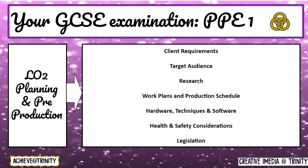For learning objective 2 of the exam paper, students need to be able to interpret a client brief and answer questions based upon the client brief and their requirements. They will also need to understand the different categories of target audience and how different target audiences would impact on how a product would be created. Examples of primary and secondary research will also be required. There is a huge emphasis on reading the client requirements and meeting the client's needs. Students may be asked to create a work plan or production schedule that incorporates tasks, activities, and timescales, as well as ensuring they have chosen the appropriate hardware and software for that media product.